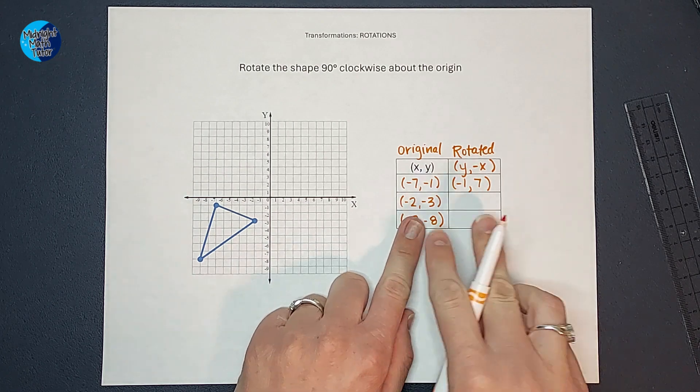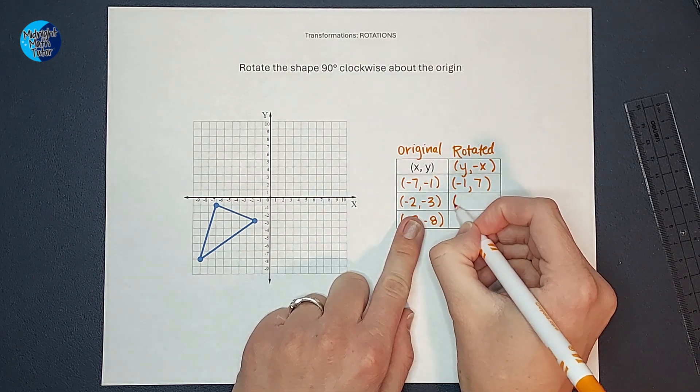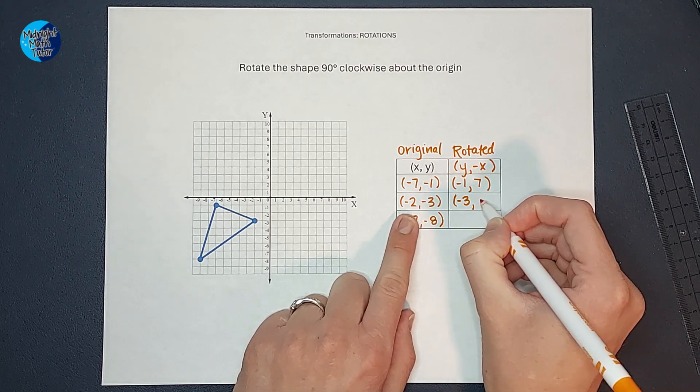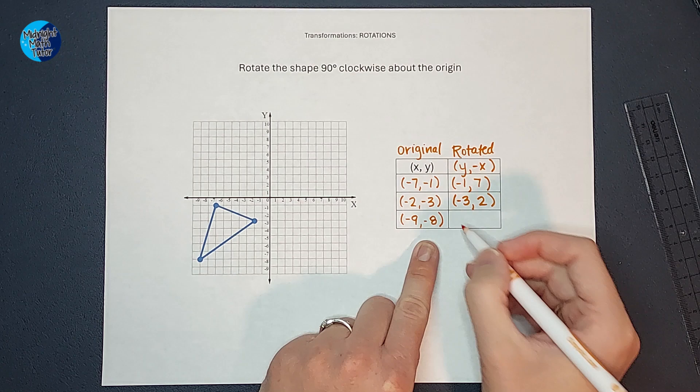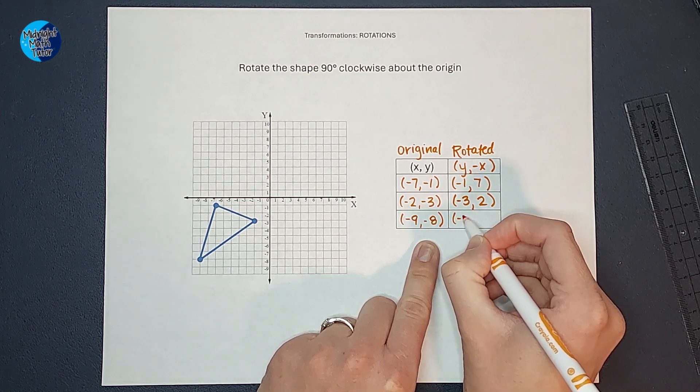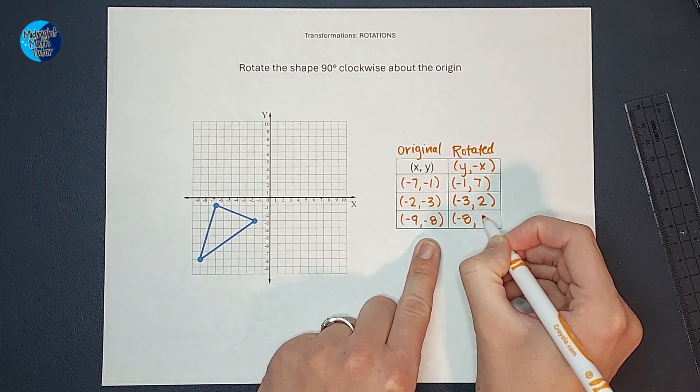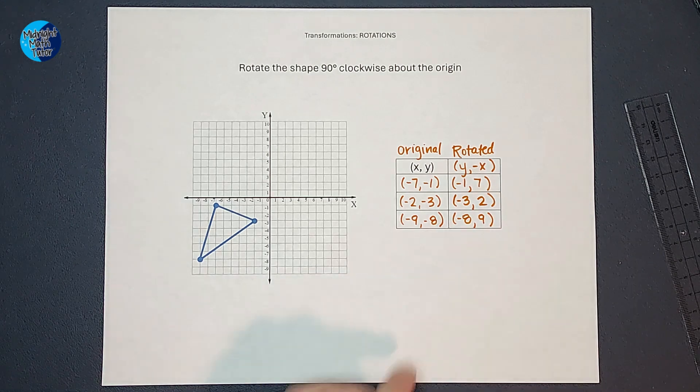Again, I'm going to switch these. So the y is first, negative three, and I'm going to make the negative two positive. Switch these guys. So it's negative eight, and make the nine positive.